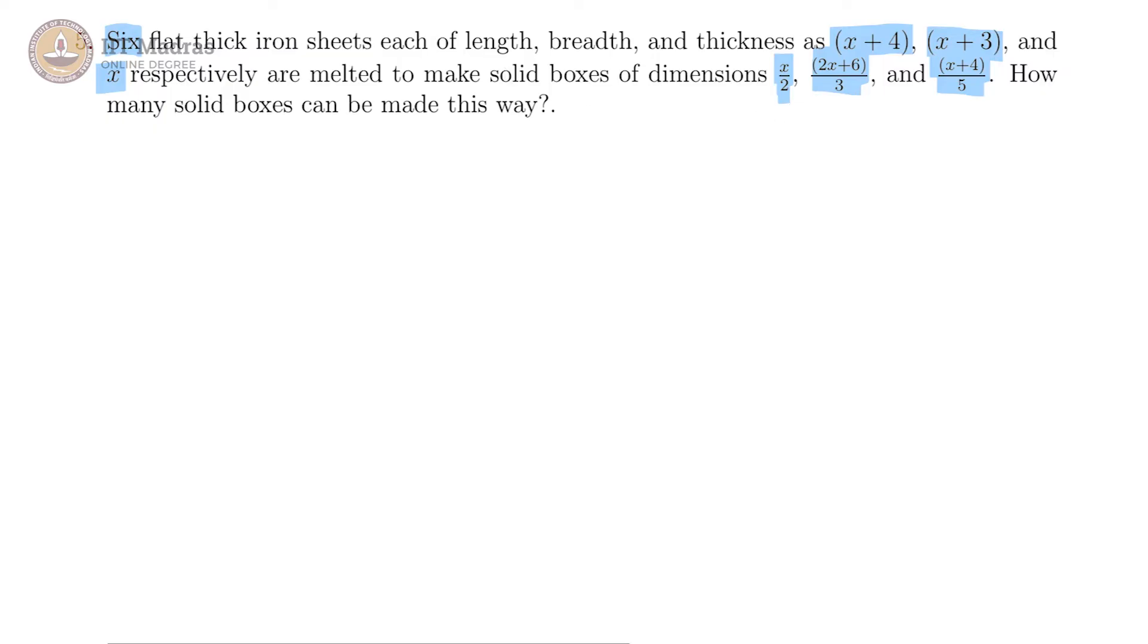Basically the volume will have to be equal. First we find the volume of our six sheets put together. That would be 6 times (x+4) times (x+3) times x. And this would be equal to the volume of the solid boxes.